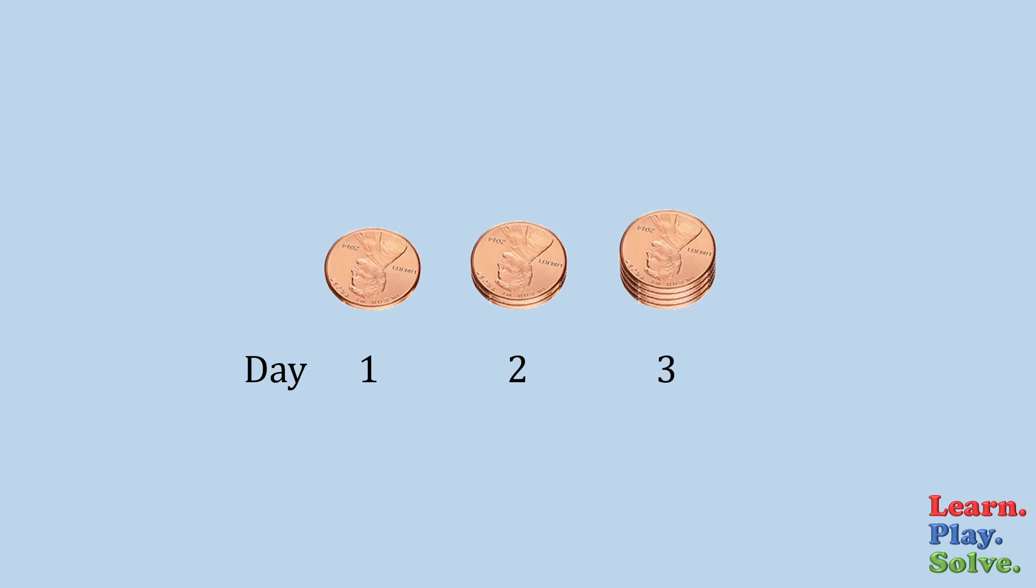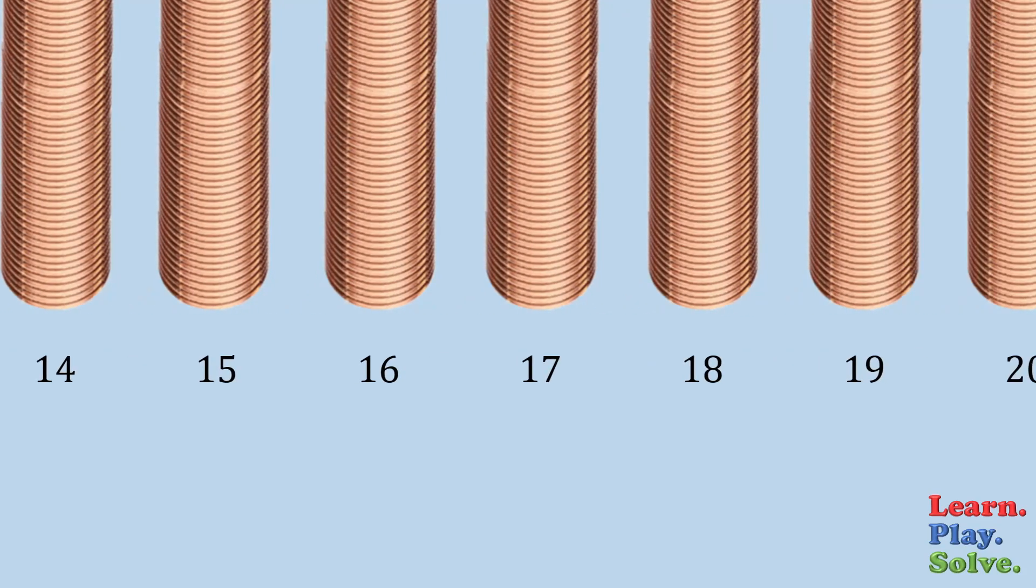Suppose I do this for a month. Each day, I give you twice as many pennies as the day before. By the end of 30 days, you would have much more than a million dollars.